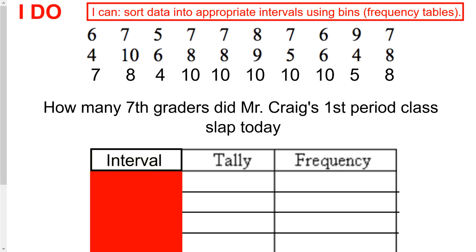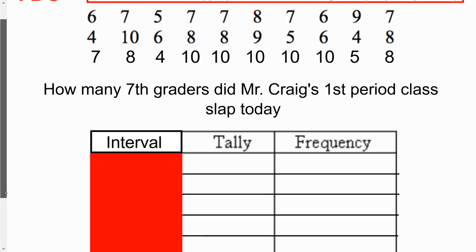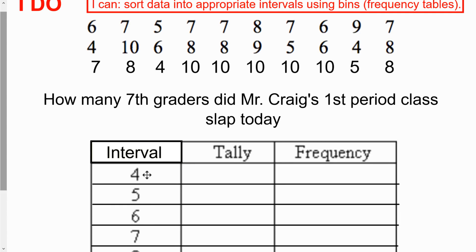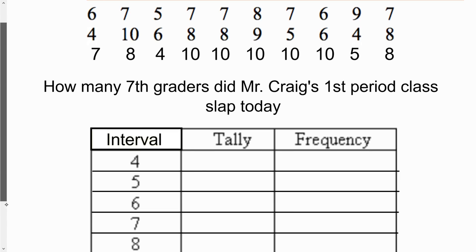So I have a list of data here for how many 7th graders did Mr. Craig's first period class slap today. How many 7th graders did Mr. Craig's first period class slap today? Well, I had a student who said 6 times. We had a student say 7 times. Another student said 5. I had two more students who said 7. Another student said 8. And so on and so forth. We have these possible values. And we're going to stick to a very simple interval right now.